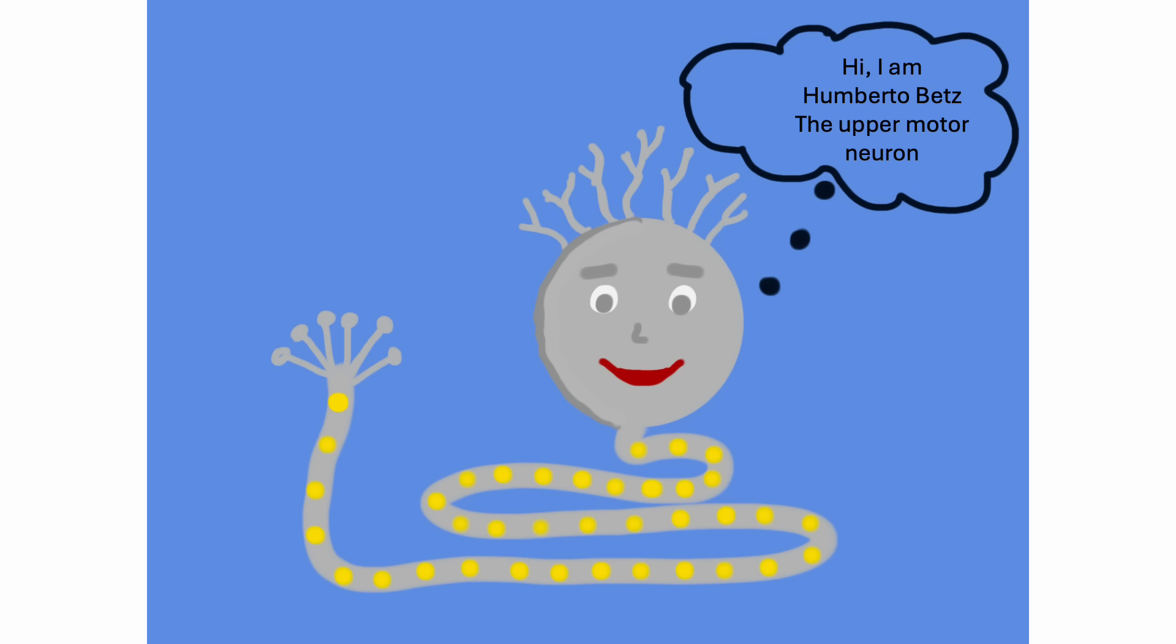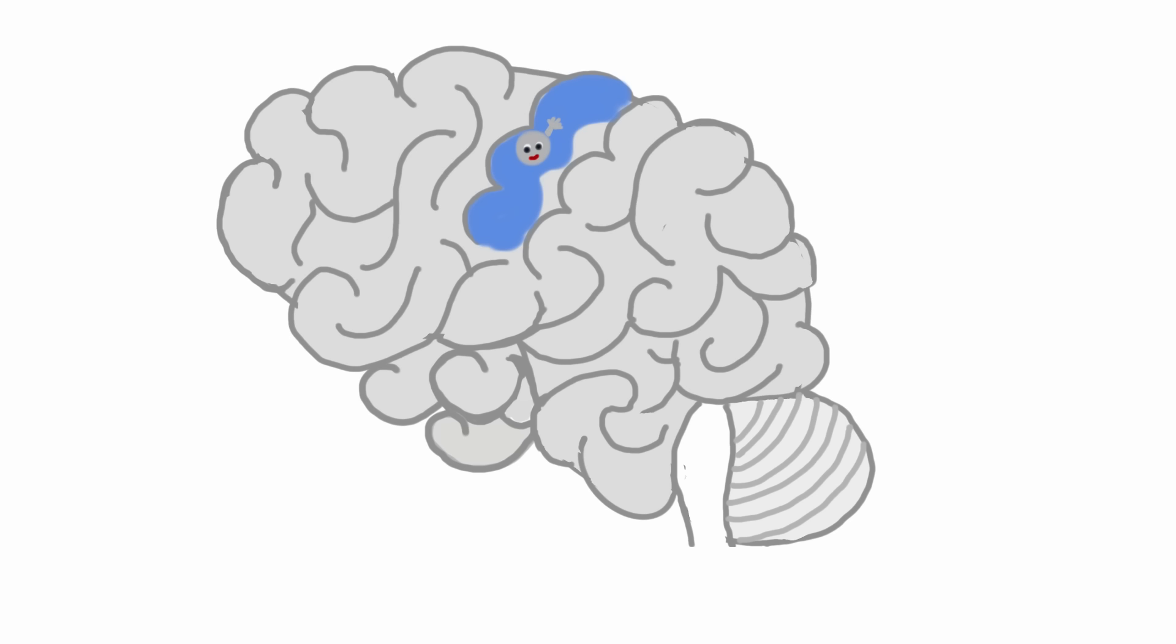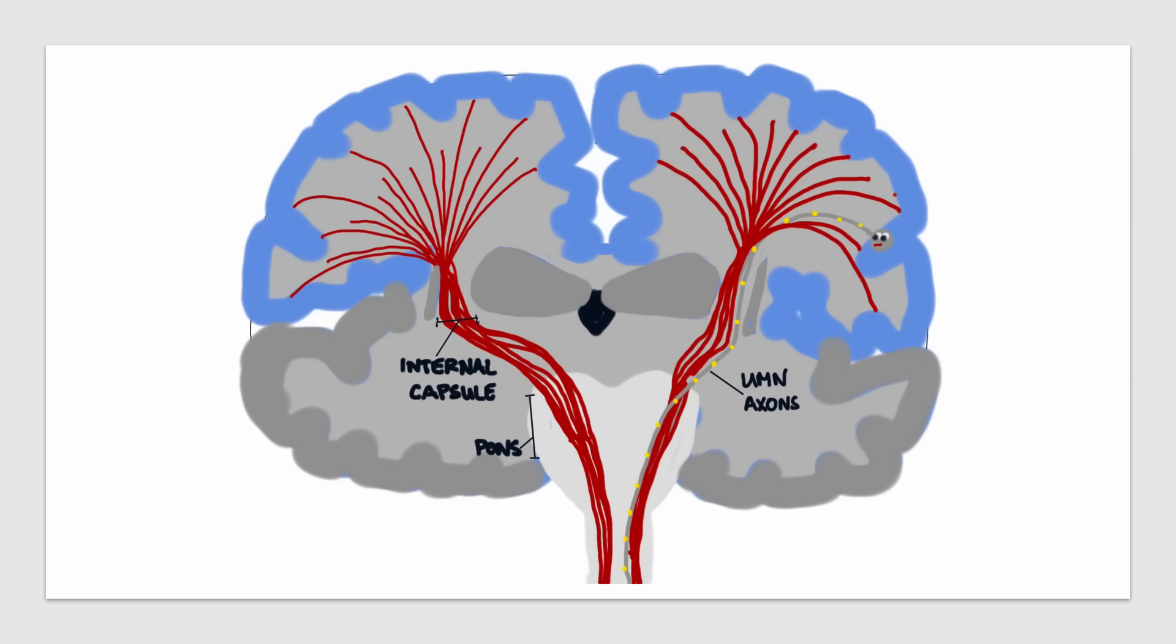My axon is impressive. The axons of upper motor neurons can be as long as one meter. I live in the precentral gyrus, also known as the primary motor cortex in the frontal lobe, adjacent to the central sulcus and the somatosensory cortex in the parietal lobe. The primary motor cortex is responsible for initiating and controlling voluntary movements. I myself am responsible for movements of the right thumb.